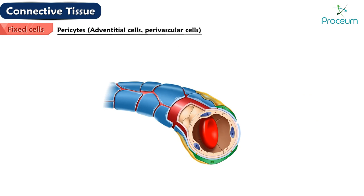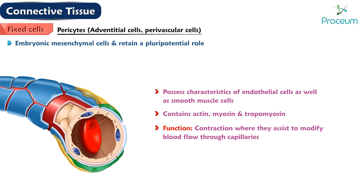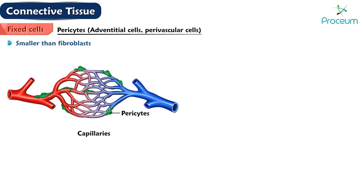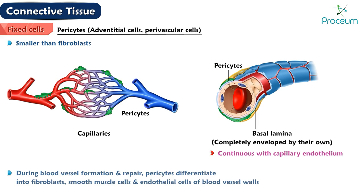Pericytes, also known as adventitial cells or perivascular cells, are derived from embryonic mesenchymal cells and may retain a pluripotential role. They possess characteristics of endothelial cells as well as smooth muscle cells because they contain actin, myosin, and tropomyosin, suggesting that they may function in contraction where they assist to modify blood flow through capillaries. They are smaller than fibroblasts, are located mostly along capillaries, and are completely enveloped by their own basal lamina which is continuous with the basal lamina of the capillary endothelium. During blood vessel formation and repair, they may differentiate into fibroblasts, smooth muscle cells, as well as endothelial cells of blood vessel walls.